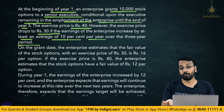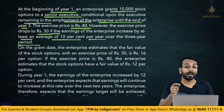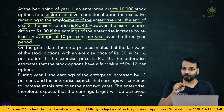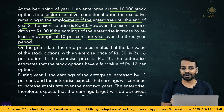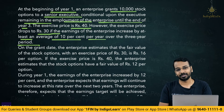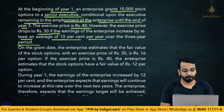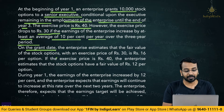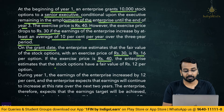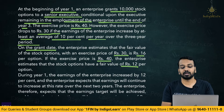If earnings increase, the exercise price comes down to ₹30, which is beneficial for the employee. If earnings do not increase by an average of 10%, the employee pays ₹40 per share. Employees will therefore be motivated to increase profits so their exercise price is reduced. On the grant date, the enterprise estimates that the fair value of the stock option with an exercise price of ₹30 is ₹16, and with an exercise price of ₹40 is ₹12.